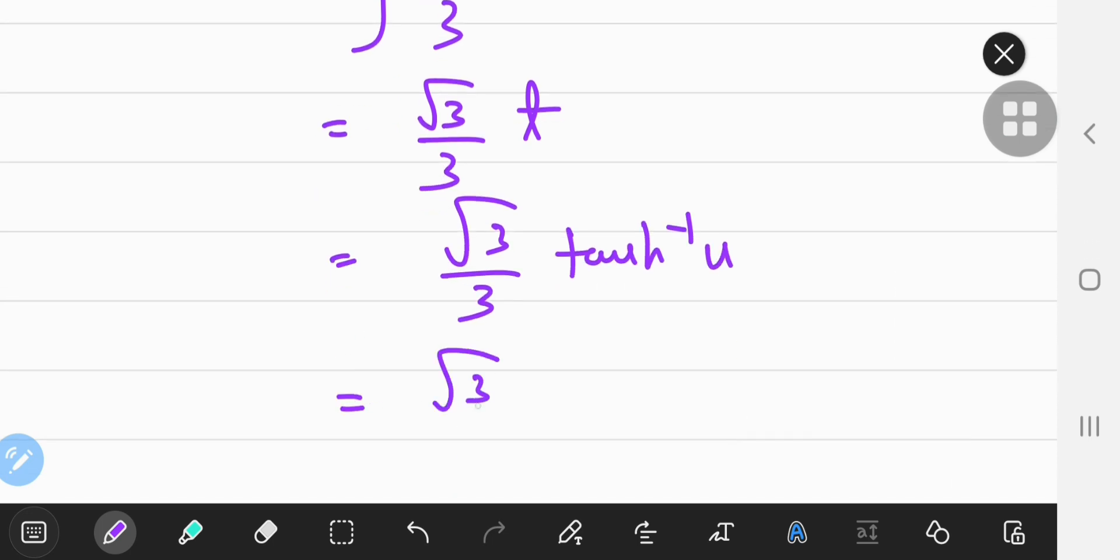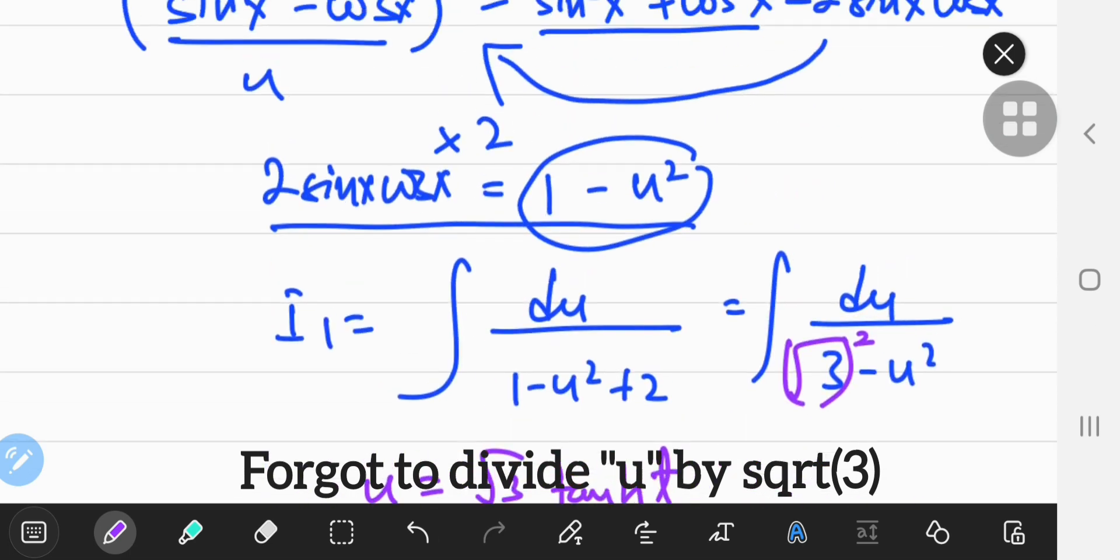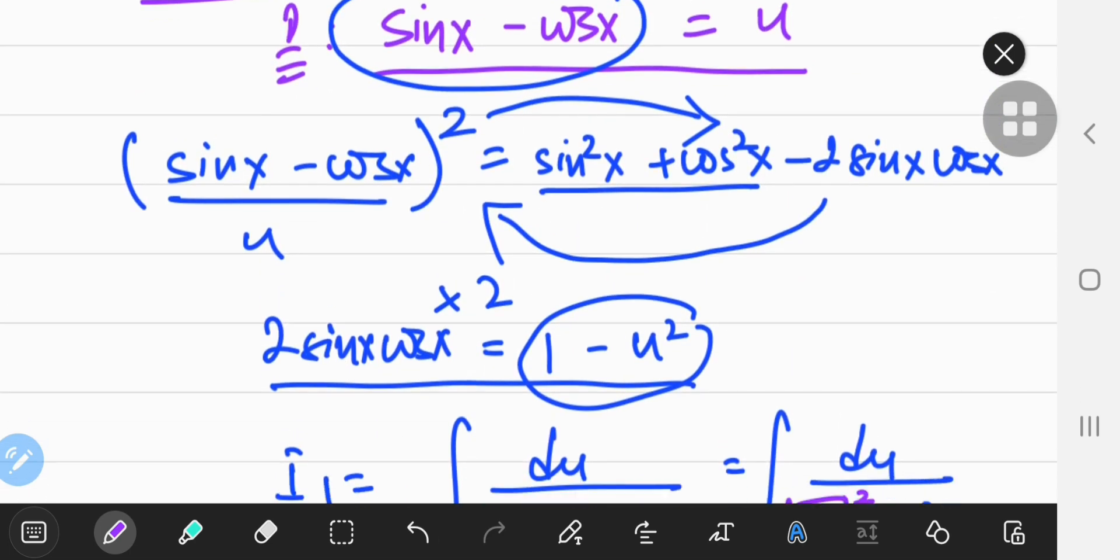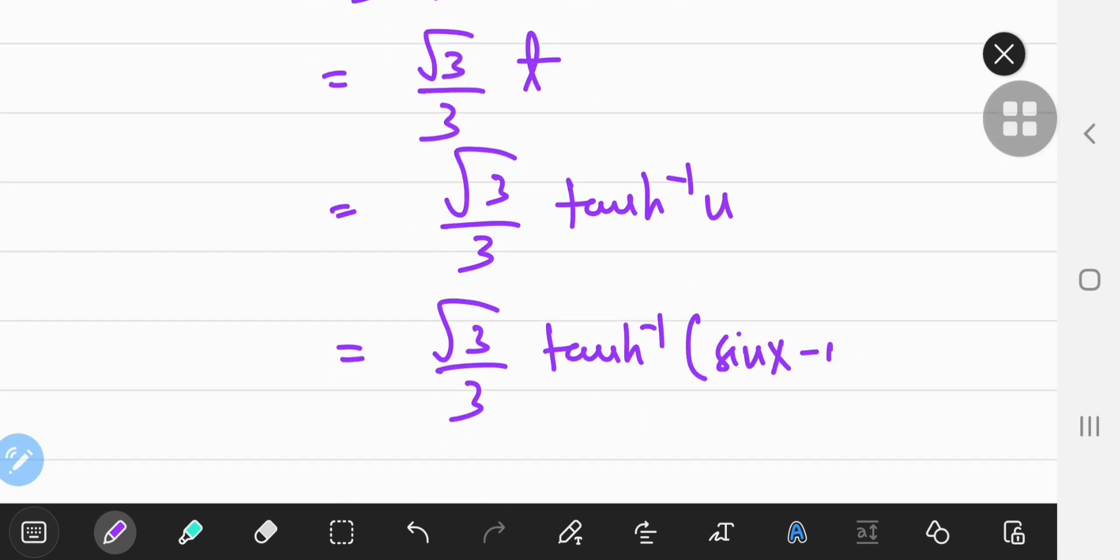And u itself is, I think it was sine x minus cos x, or was it sine x plus cos x? I don't even remember anymore. Yeah, it's sine x minus cos x. So that's going to be sine x minus cos x. So that's the first integral, i1.